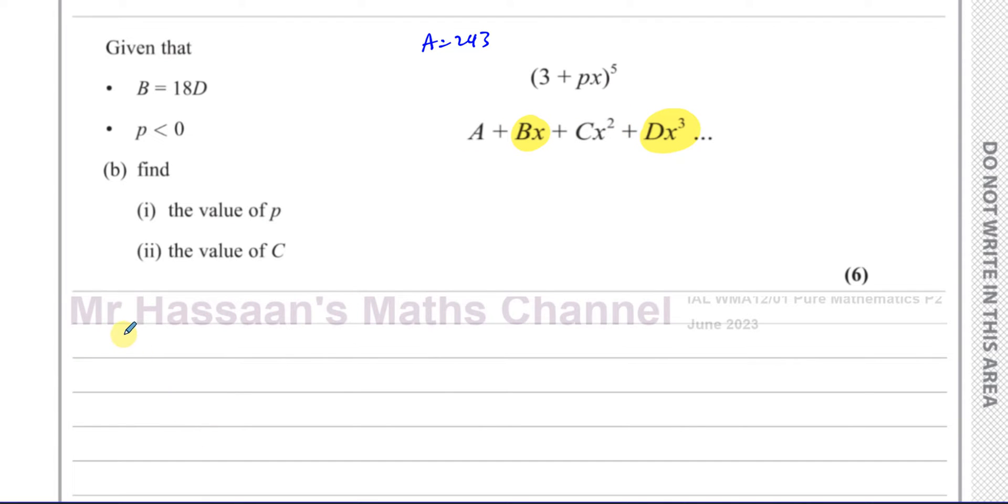The B term is going to be the x term. So when we do binomial expansion, this is how I like to set it up. We have our nCr part, and because the highest power is 5, there's going to be 5 there for sure. Then you have the first term, which is 3, and then we have px. Now if I want to find the value of B, that's going to be the coefficient of the x term, which means this is going to be raised to the power of 1. Now if this is raised to the power of 1, this is going to be raised to the power of 4.